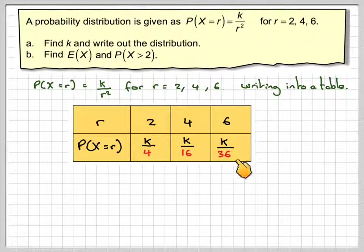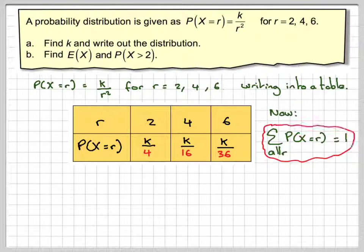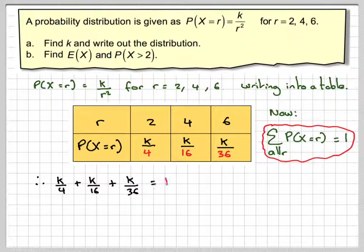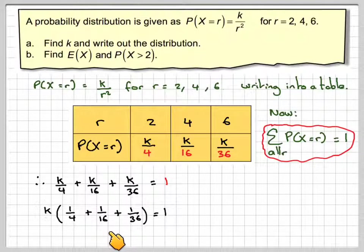What do we know about these three probabilities? Well, if this is going to be a discrete random variable, if we add these three probabilities together, we should get 1. So therefore, k/4 + k/16 + k/36 = 1. k is a common factor. So k(1/4 + 1/16 + 1/36) = 1.